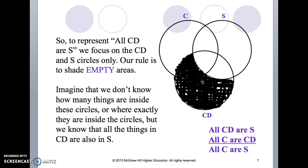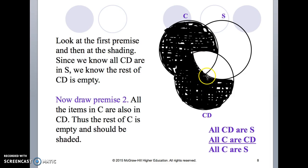So we're left with all the C's included or placed in the CD circle. All C's are CDs and you can see from the C circle the only C's we have are contained in the CD circle.